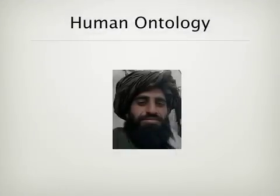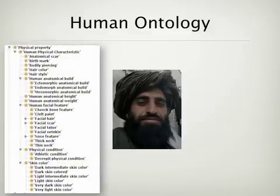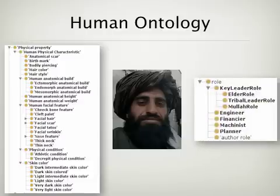The Basic Formal Ontology also allows for the representation of different views of the same object or event. Here we see the representation of a human being by their physical properties, shown on the left, as well as some of the roles that they might be in, shown on the right.